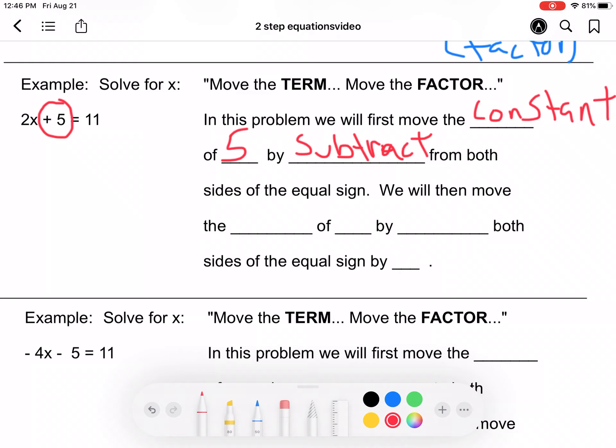From both sides of the equal sign. So we're going to go ahead and do that now. We're going to go ahead and subtract the 5. Minus 5. Minus 5. Which leaves us 2x is equal to 6.